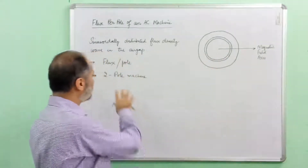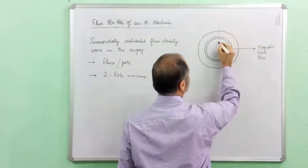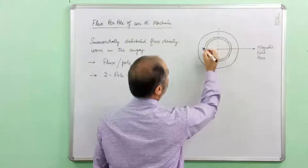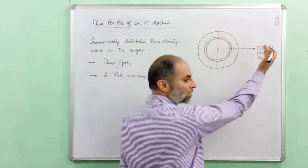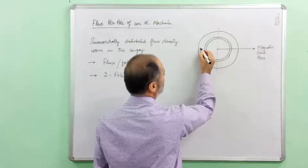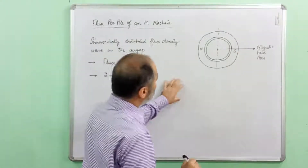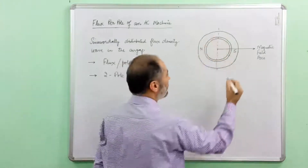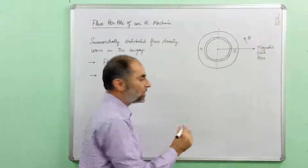Now since we have considered a two-pole machine, if we draw a vertical line here we'll have one pole on one side of this line and another opposite pole on the other side. Therefore, a north pole on this side and a south pole on this side, and the magnetic flux density in the air gap is plotted as a function of the space variable theta.